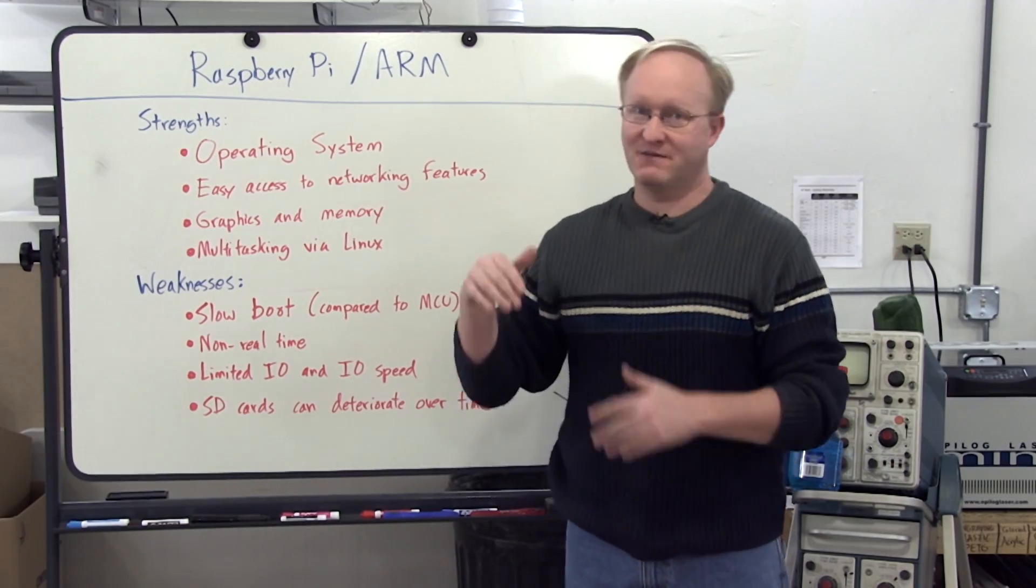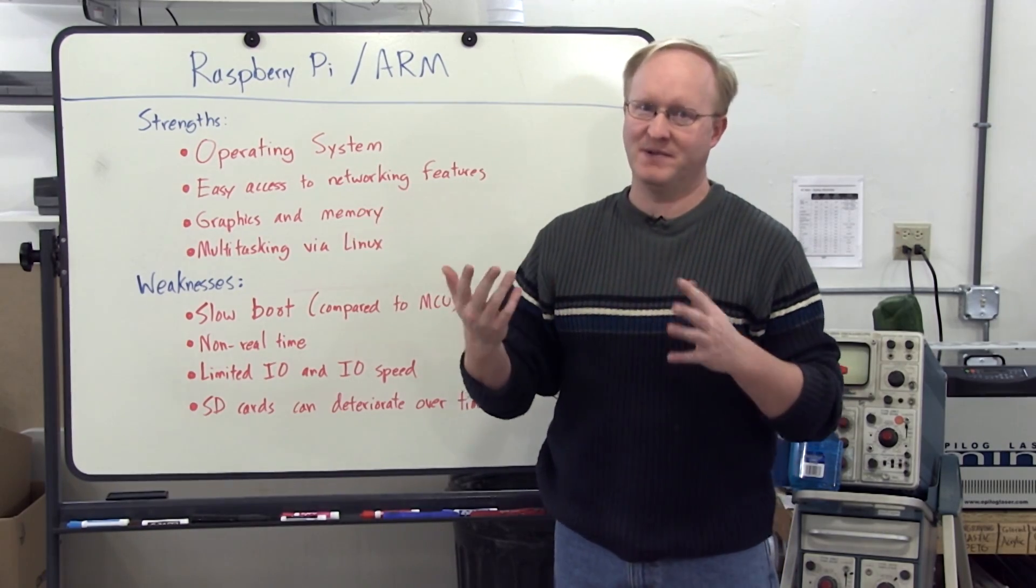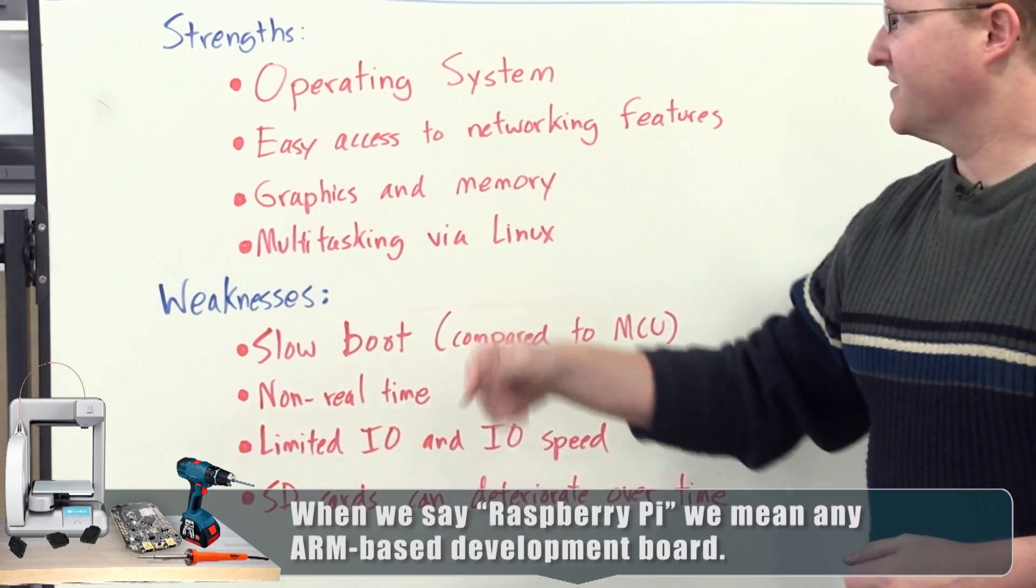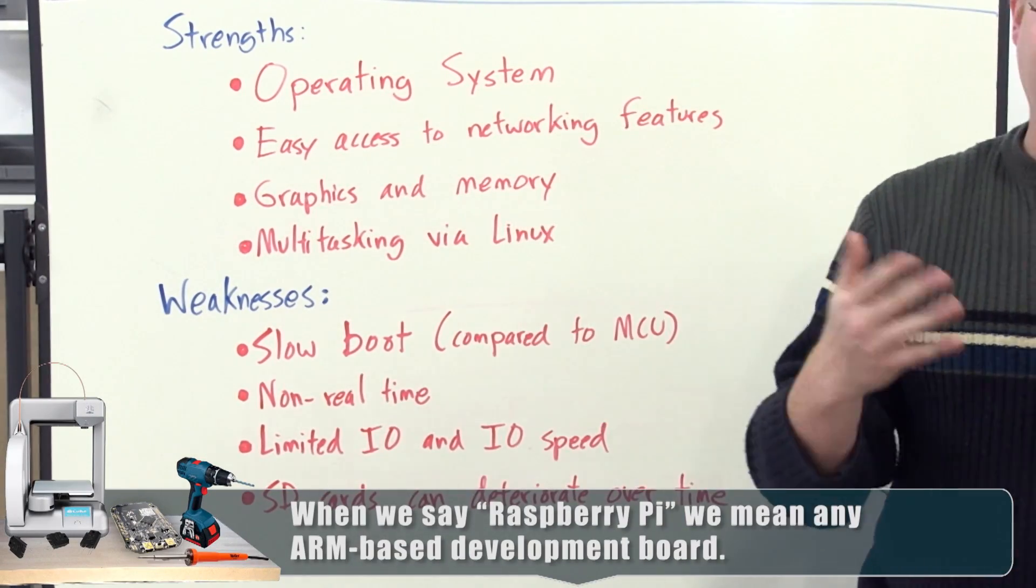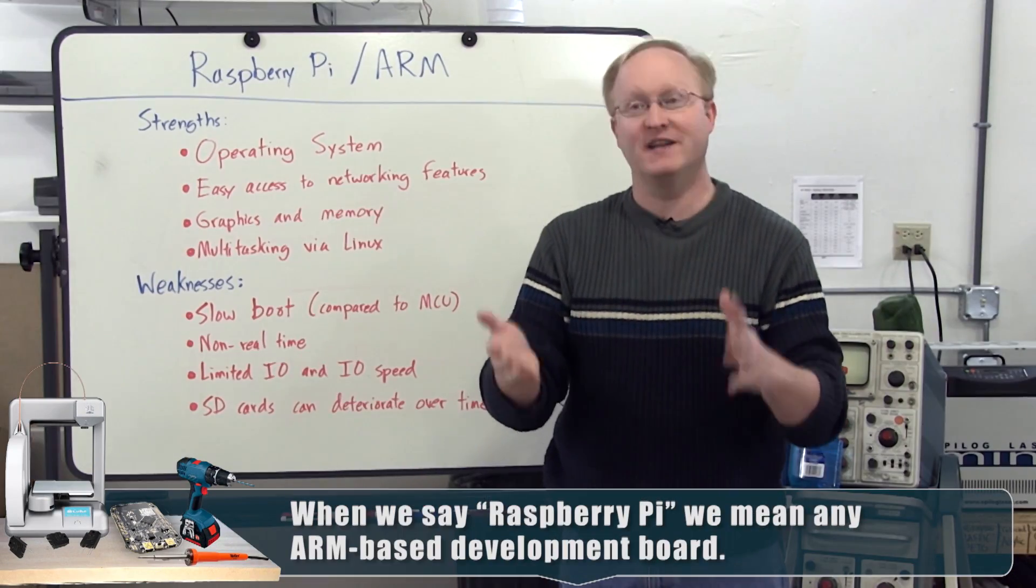Our final example is a Raspberry Pi or similar ARM-based system. Strengths. Operating system. That's a pretty big strength. It's like a real computer. It is a real computer.